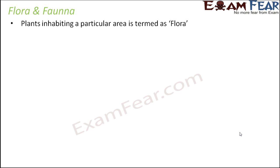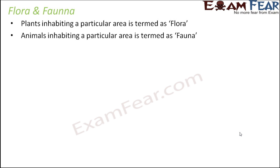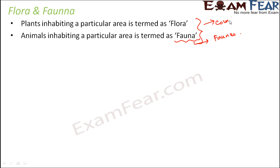Now that we have discussed the various protected areas, let us talk about flora and fauna. The plants inhabiting a particular area are called flora, and the animals inhabiting a particular area are called fauna. These are the two terms used for plants and animals. The word fauna is derived from a Latin word — faunus — which is a Roman goddess of earth and fertility. So fauna refers to all animals, and flora refers to all plants.